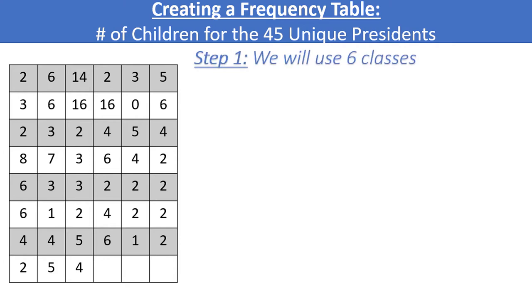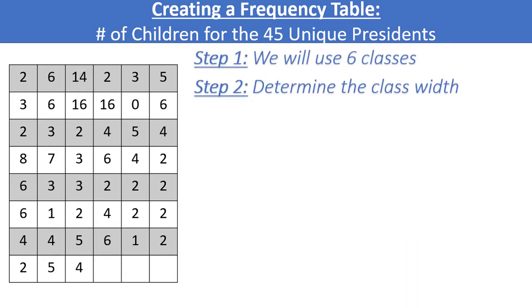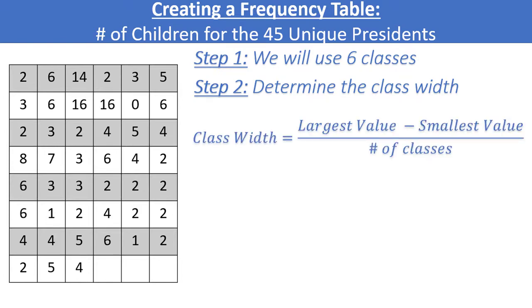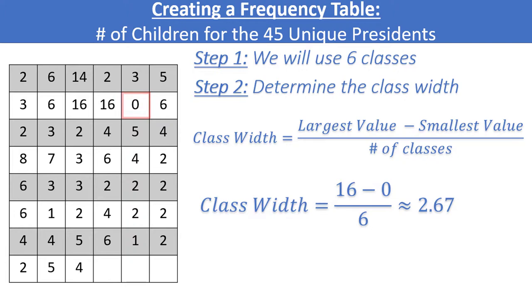Step 2 is to determine the class width, which tells us how many values to include in each class. To find the class width, take the largest value in your data and subtract the smallest value, then divide by the number of classes determined in step 1. Glancing back at our data, the largest value is 16 and the smallest value is 0. So 16 minus 0 equals 16, and then we divide by 6, which comes to about 2.67 rounded to two decimal places.